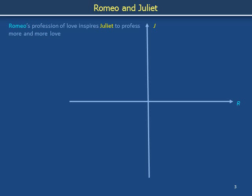When Romeo expresses love, Juliet is inspired to increase the love that she expresses. For simplicity in this model, the time derivative of the love that Juliet expresses is positively proportional to Romeo's love with proportionality coefficient 1. When Romeo expresses hate, R is less than 0 and djdt is negative — downward arrows. Juliet does not want to pursue Romeo when Romeo appears to resent her company. When Romeo expresses love, R is greater than 0 and djdt is positive — upward arrows. Juliet has hope that increased affection can nurture her romance with Romeo.